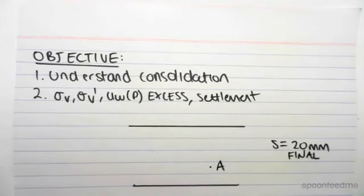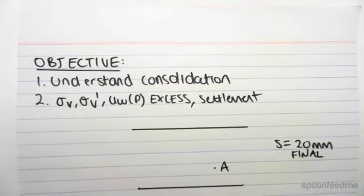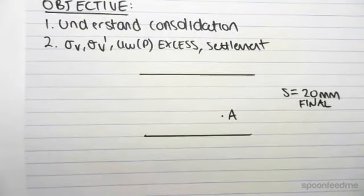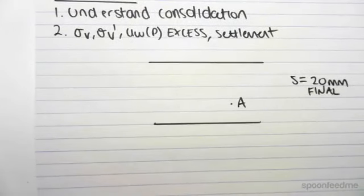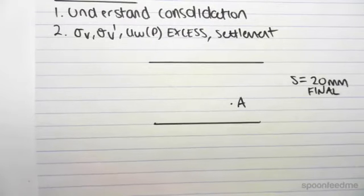Consolidation is when settlement occurs over time, so we're going to be looking at a quick model to understand this. The main function of consolidation is something called excess pore water pressure—not pore water pressure, but excess pore water pressure.